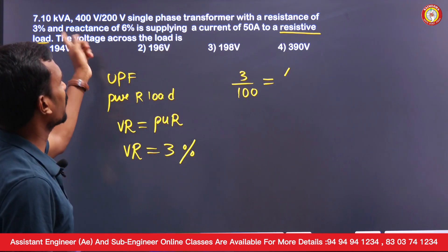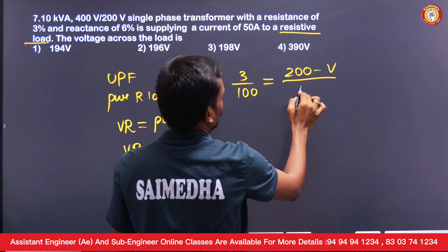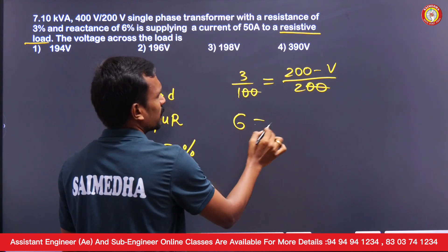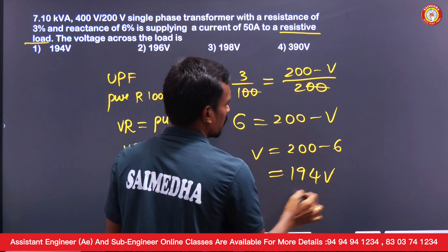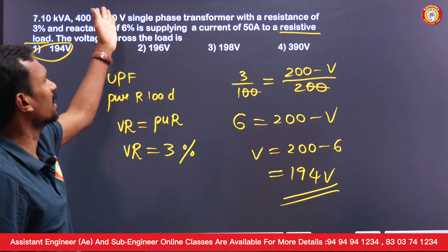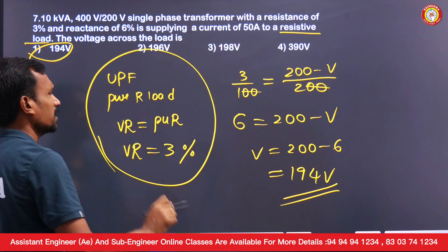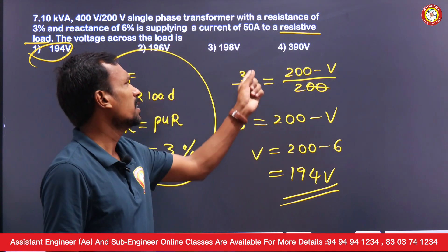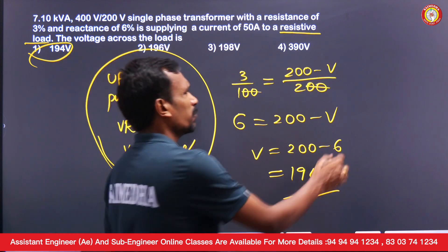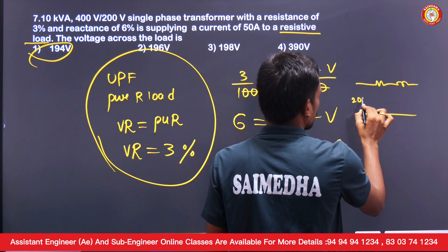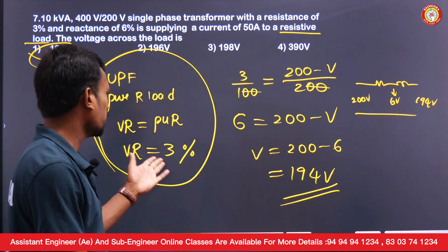Voltage regulation of 3% means: (no load voltage − full load voltage) / no load voltage = 3%. Taking the secondary side (200 V no load), 6 volts = 200 − V, so V = 194 volts. The load voltage is 194 V. The voltage drop is 6 V, which is 3% of 200 V.